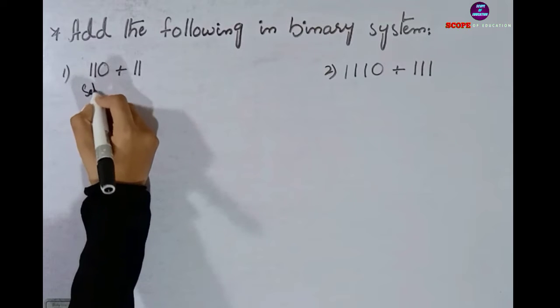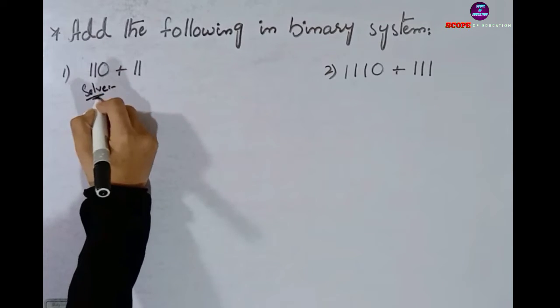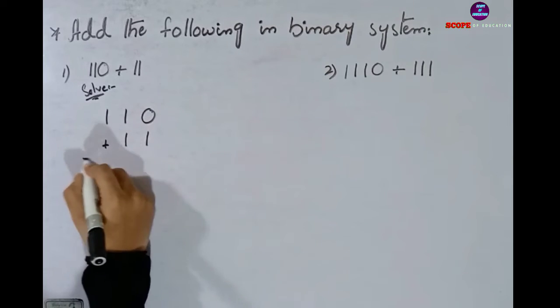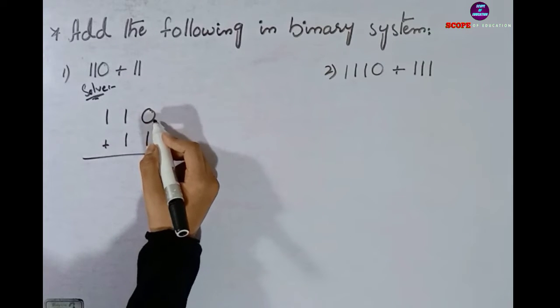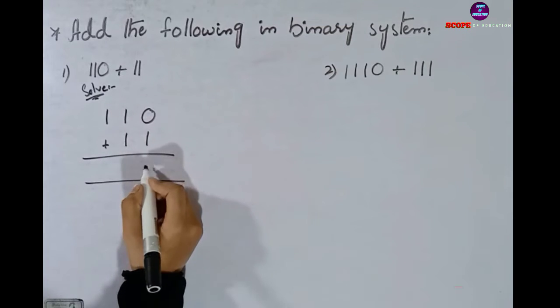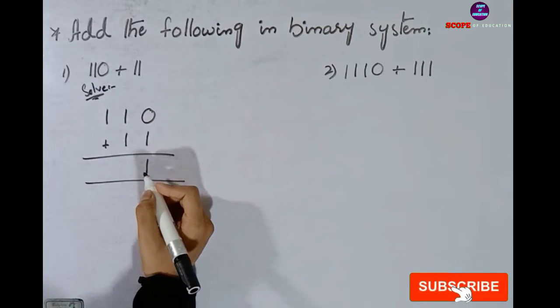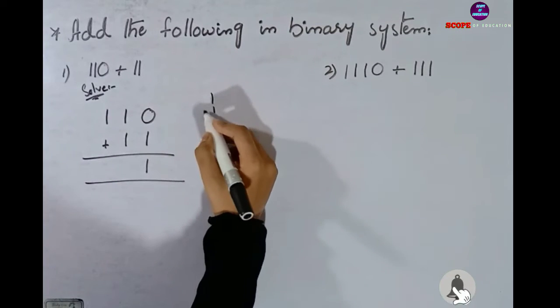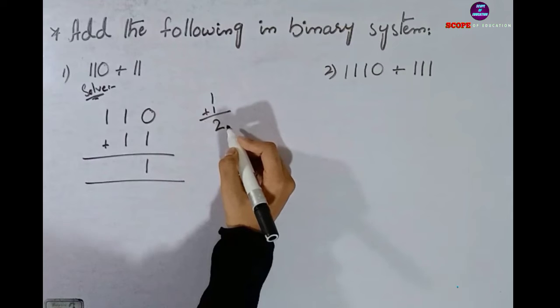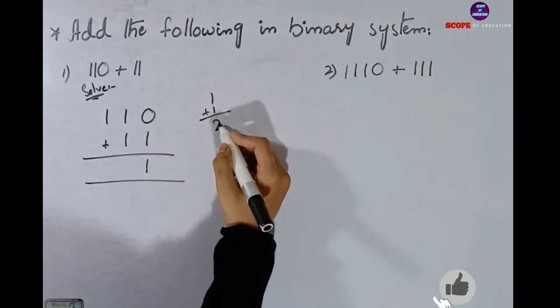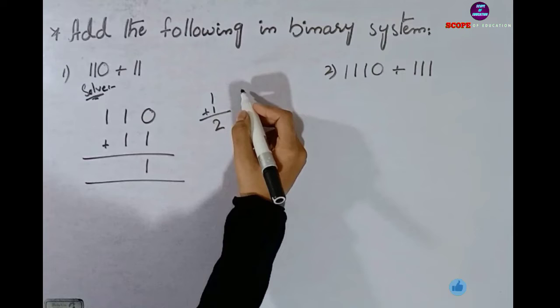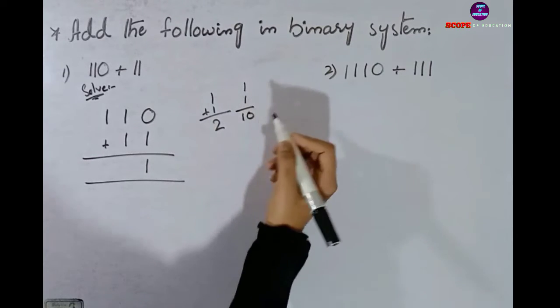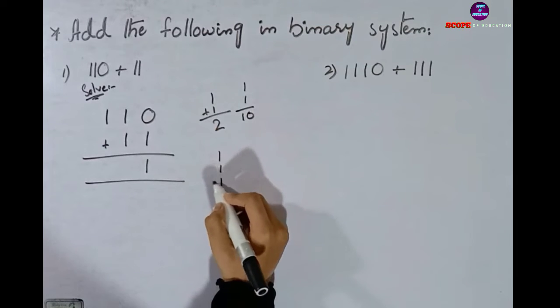First we will solve this first question. We have the bigger value on top and below it 11. Here we cannot do one plus one, we have to do one plus one normally. When we do one plus one, our answer is 2, but here there is no such thing. We have to add binary numbers, so we add two, this is equal to 10. If we have triple one, then it will be equal to 11.